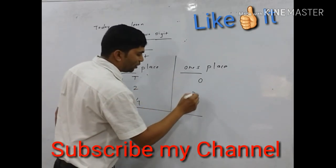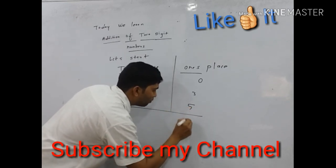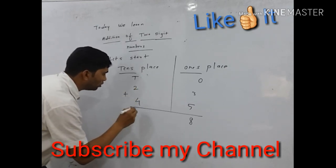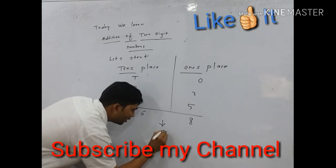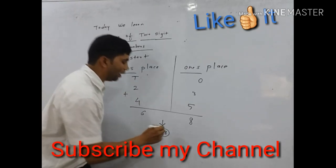We add 3 with 5 at ones place: 3 plus 5 equals 8. And then 2 plus 4 equals 6. We get 68. This is the answer of our two digit addition.